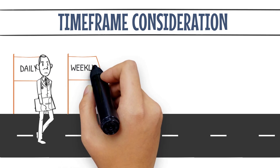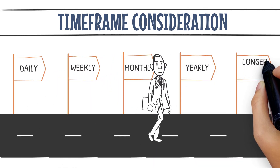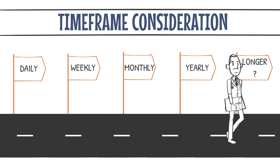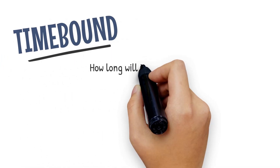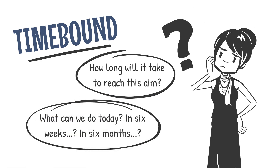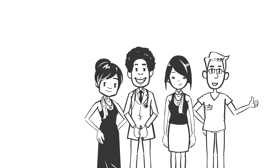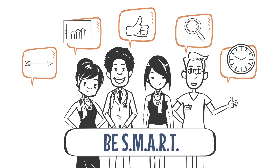Aims with small, incremental changes may benefit from daily or weekly time frames, whereas larger projects or organizational strategic plan aims may require several months or even years. A time-bound aim answers how long will it take to reach this aim, and what can we do today, six weeks from now, six months from now? As you begin improvement projects, it is important to define what you want to achieve and be SMART with your aim.